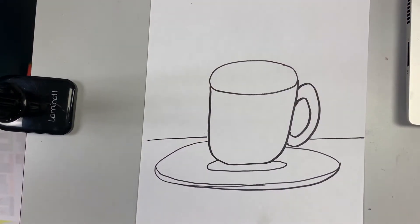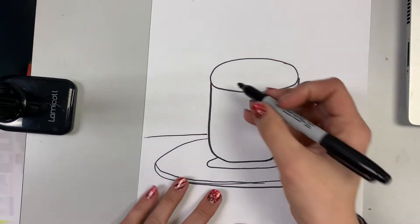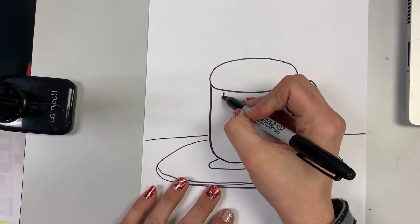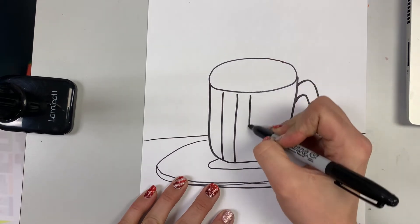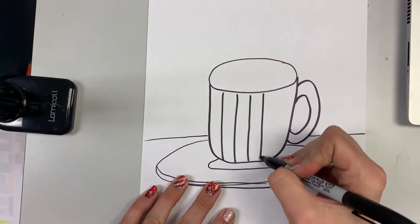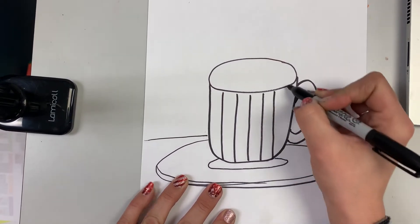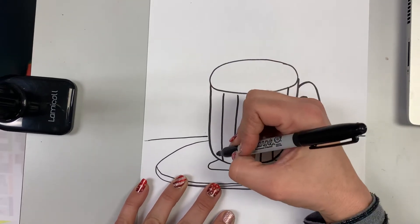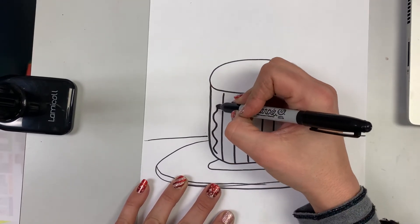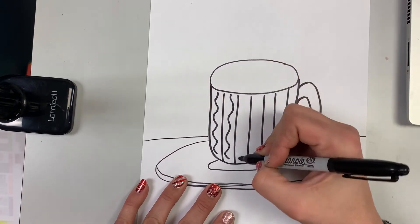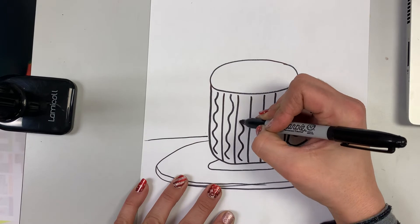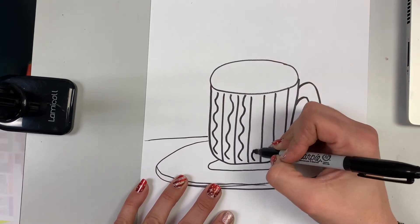All right, now it's time to add pattern. Remember, pattern is repeating line, shape, and color. So I want you to get creative. You can decide what kind of pattern you want to do. It could be straight lines. It could be zigzag lines. It could be curvy lines. You could do a combination. Look at this. I'm going to combine straight lines and curvy lines in this one. It's just repeating. So remember, whatever you choose to do, you want to make it repeat.